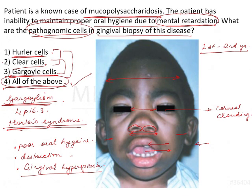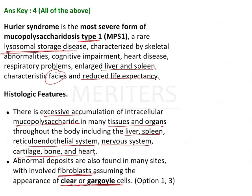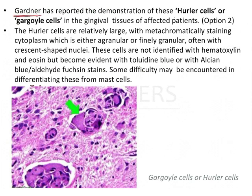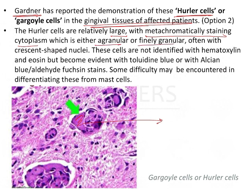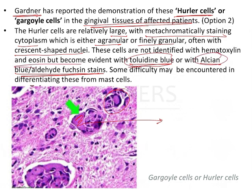Abnormal deposits are found in fibroblasts that assume the appearance of clear or gargoyle cells. The author Gardner reported demonstration of these cells as Hurler cells or gargoyle cells in the gingival tissue of the affected patient. They are relatively large, with metachromatically staining, agranular cytoplasm — you can see there are no granules — and often with crescent-shaped nuclei. These cells are not identified with hematoxylin and eosin but become evident with toluidene blue, alcian blue, or aldehyde fuchsin stain.